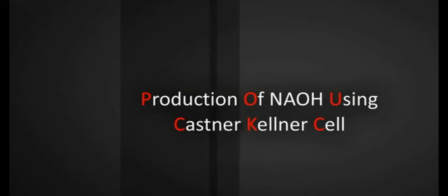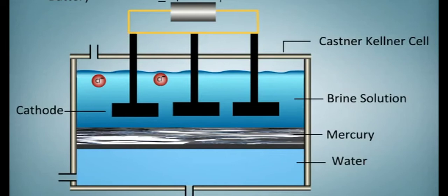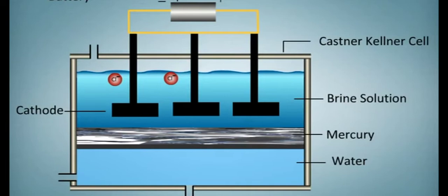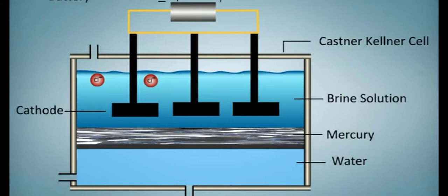NaOH using Castner-Kellner cell. The cell consists of a rectangular iron tank in which mercury flows along the bottom of the cell and is made cathode.